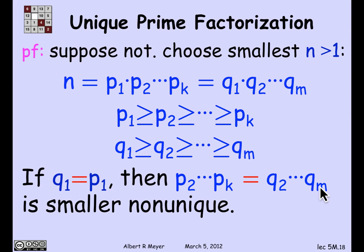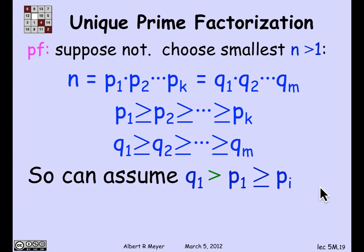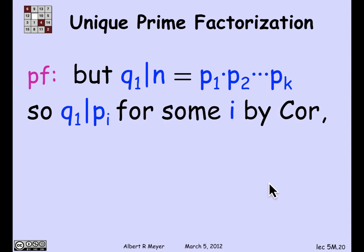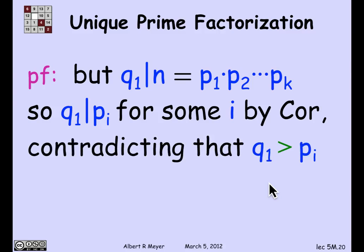So one of them has to be greater. We may as well assume that q1 is bigger than p1. Since p1 is greater than or equal to all the other p's, q1 is bigger than every one of the p's. But q1 divides n, and n is the product of the p's. By the corollary, since q1 divides the product of the p's, it must divide one of them — q1 must divide p_i for some i. But that contradicts the fact that q1 is bigger than p_i: the larger number cannot divide the smaller one. Contradiction. And we have proved the unique factorization theorem.